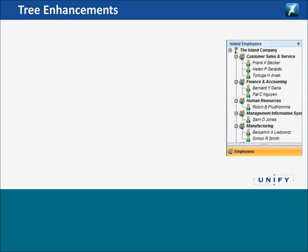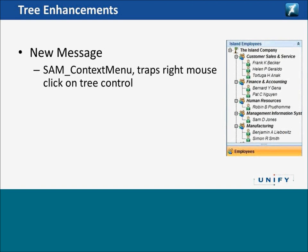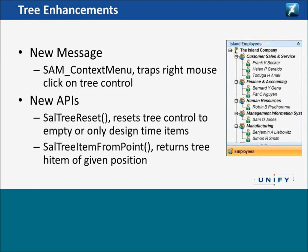Tree enhancements include a new message SamContextMenu, which traps the right mouse click on the tree control so you can react to it. New APIs include ValtreeReset, which resets the tree control to empty or only design-time items — you can choose to flush everything or reset to design-time items. SaalTreeItemFromPoint returns the tree item at a given position — you send the mouse position to that function and it tells you which tree item the mouse is on, which is very useful.